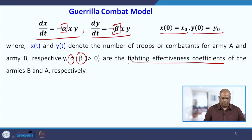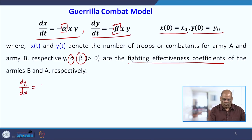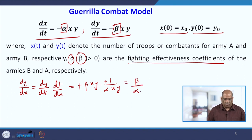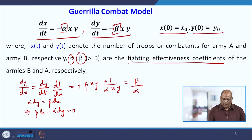Now we have to solve this. We use the technique of writing dy/dx as (dy/dt)·(dt/dx). So dy/dt is −β·x·y and dt/dx is 1/(−α·x·y), giving dy/dx = β/α. Cross-multiplying gives α·dy = β·dx, which implies β·dx − α·dy = 0, and integrating yields β·x(t) − α·y(t) = constant.